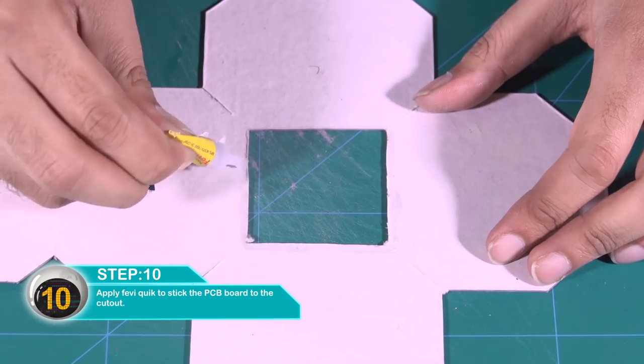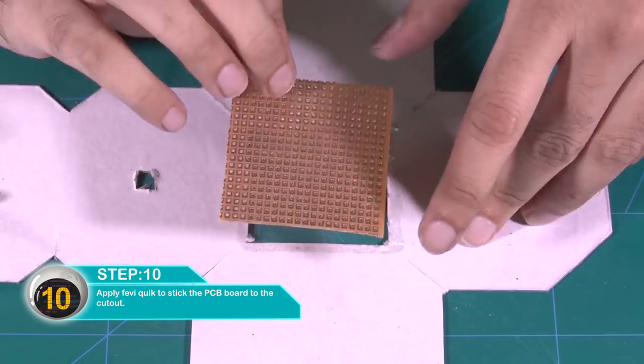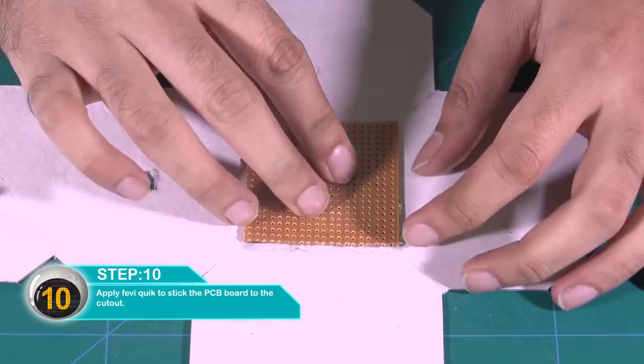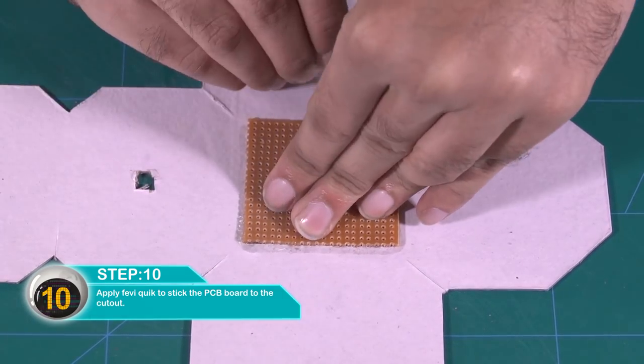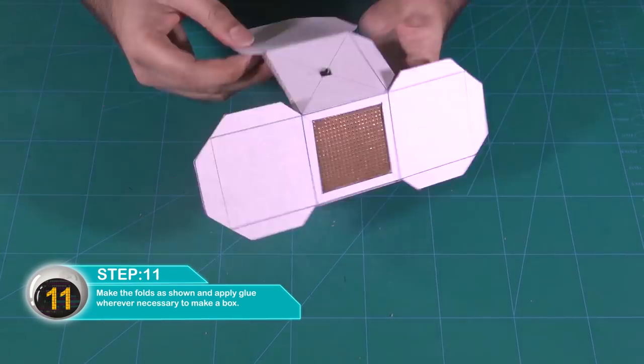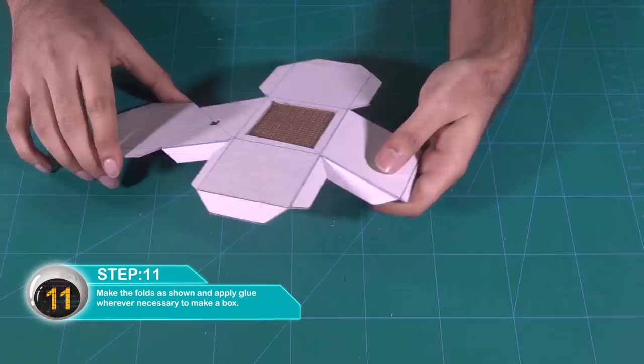Apply glue to stick the PCB board to the cutout. Make the folds as shown and apply glue wherever necessary to make a box.